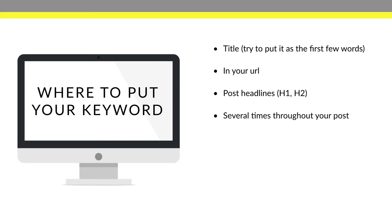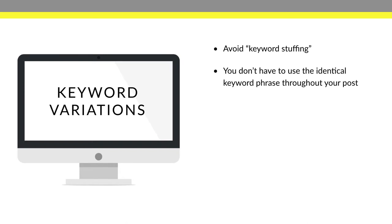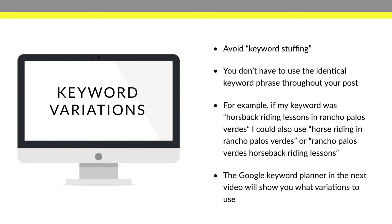Put your keyword several times throughout the blog post, but avoid keyword stuffing. Google has caught on to that and may flag and bury your post for trying to game the system. You don't have to use the identical keyword phrase every time. If your keyword is "horseback riding lessons in Rancho Palos Verdes," you can also use "horse riding in Rancho Palos Verdes" or "Rancho Palos Verdes horseback riding lessons" — variations of the keyword. The Google Keyword Planner will actually give you those variations, so you don't have to make them up.